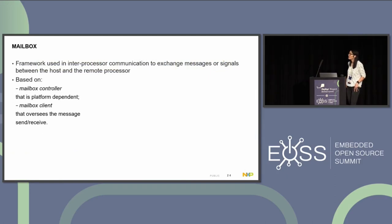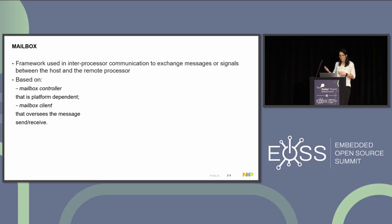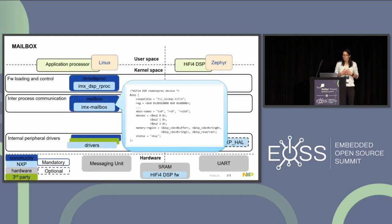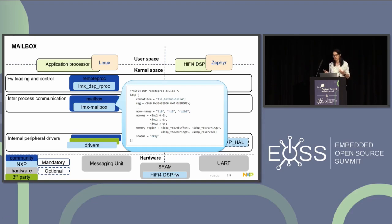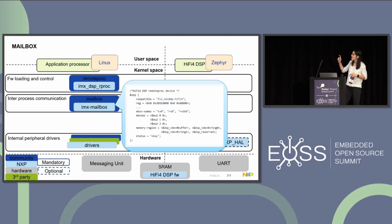The next framework is the Mailbox. This is in charge of sending and receiving messages between cores. It's based on a mailbox controller — which is platform-dependent — and a client that oversees the messages to send and receive. We have the generic Mailbox framework and our platform-specific IMX Mailbox controller. For this, we add the DSP node in the device tree in Linux with the compatible to load our driver, and define the inboxes and inbox names properties — specifying the messaging unit being used, with transmitter, receiver, and receiver with doorbell configurations.